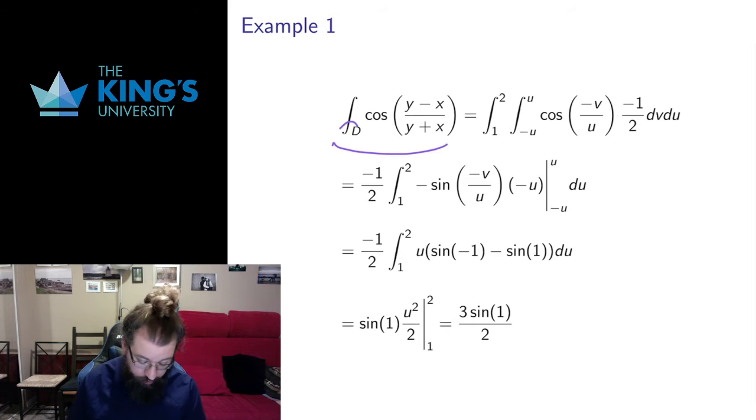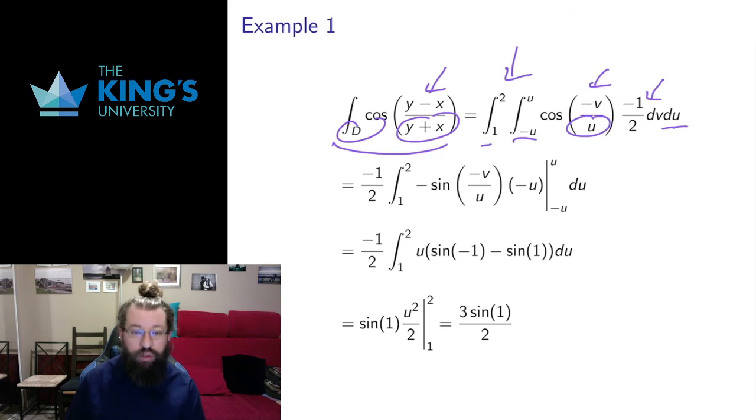So here's the original. The region d is now described in the new variables as u, the outside variable, going from 1 to 2, and v, the inside variable, going from negative u to u. V was defined to be x minus y, so y minus x is negative v. U is defined to be x plus y, so y plus x is u. That changes everything. It changes the region, changes the differential with Jacobian, changes the integrand. And then I just proceed to do this integral. I won't go over the steps. Feel free to review them if you wish. But the steps of this integral are now fairly reasonable to do. And I can end up with a reasonable value for integrating this function over this trapezoidal region.